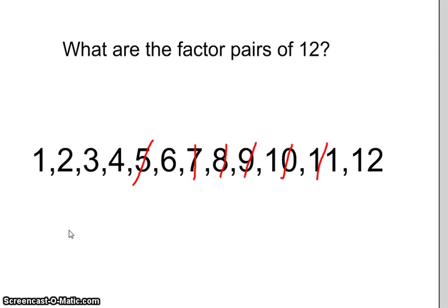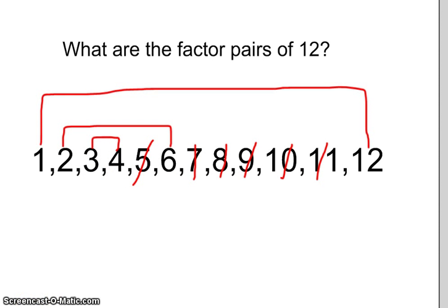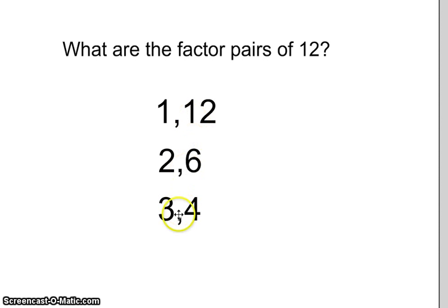you can match up the factors 1 with 12, 2 with 6, and 3 with 4. These numbers that you have matched up would be called the factor pairs for 12. So if you look at your final result, we see that 12 has three factor pairs: 1 and 12, 2 and 6, 3 and 4.